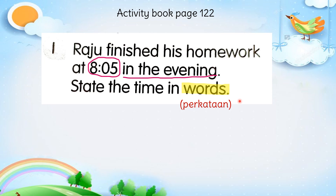So you have two ways to write the answer. The first one, you can just write 8.05 in the evening. You have to spell one by one: 8 — E-I-G-H-T, then 0 — Z-E-R-O, then 5 — F-I-V-E. Then, in the evening.